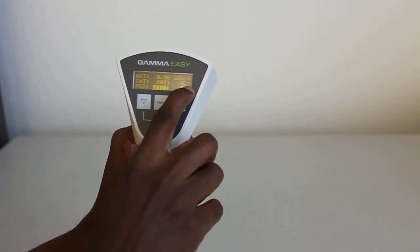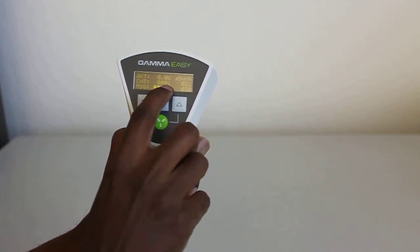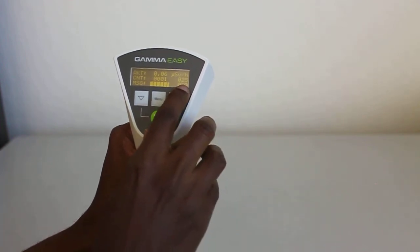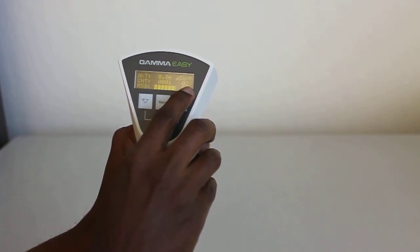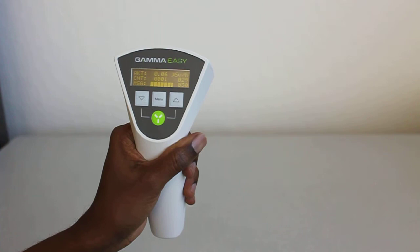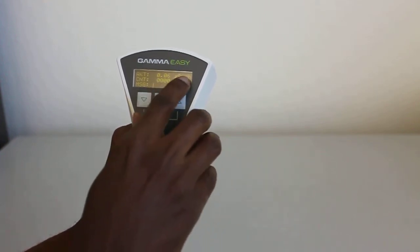It will count up every second, telling you it's one count or one event that's happened within that 30-second window. Once it reaches 30 seconds, it'll cycle back.